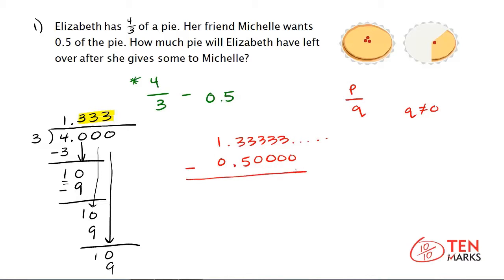Now subtract column by column: 3 minus 0 is 3, 3 minus 0 is 3, 3 minus 0 is 3, 3 minus 0 is 3, and continuing this pattern through the repeating digits.